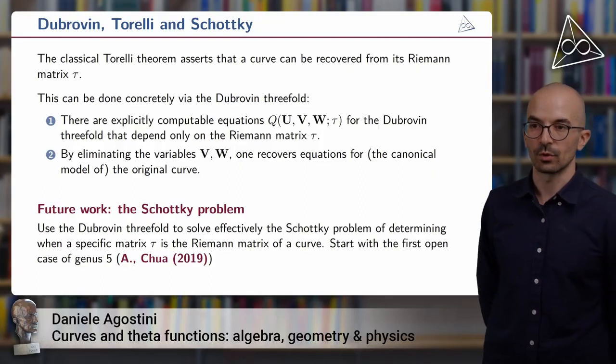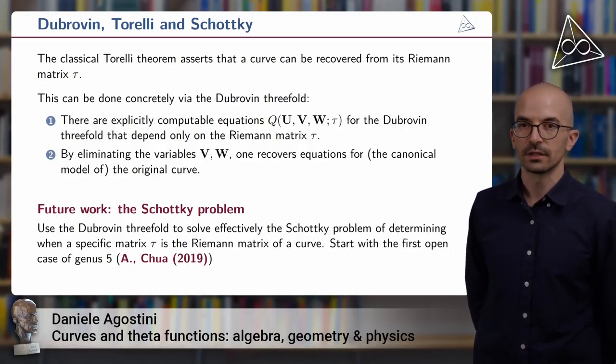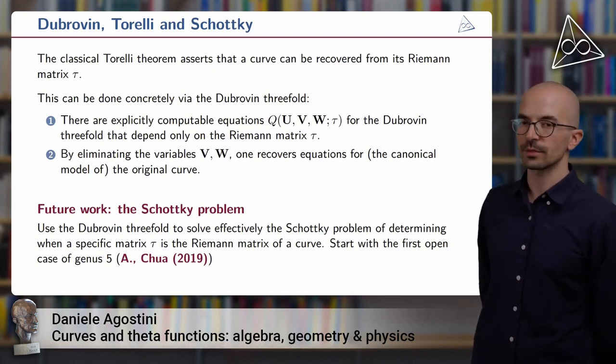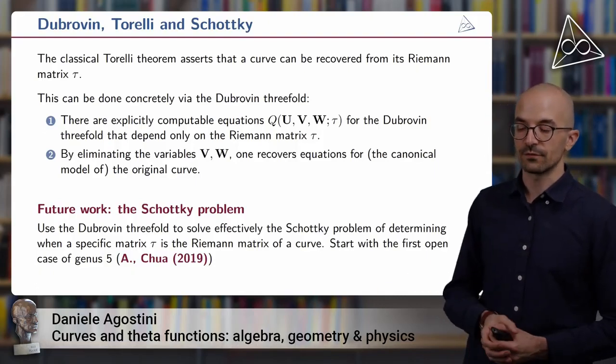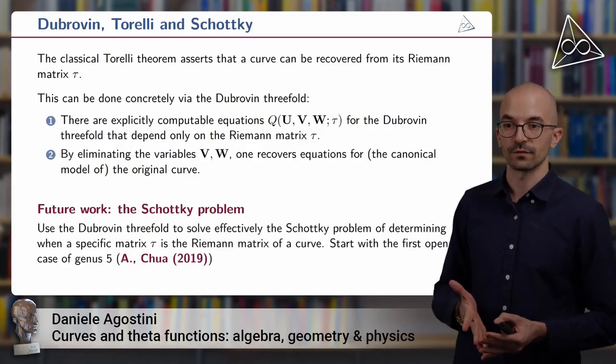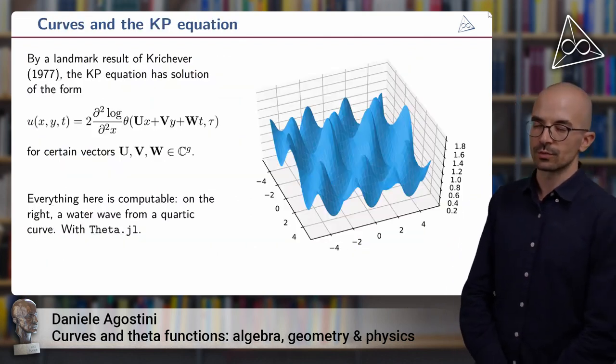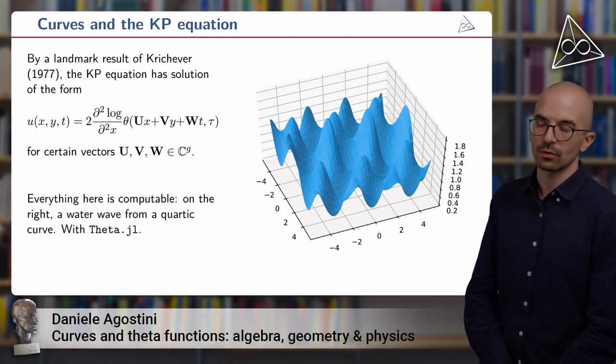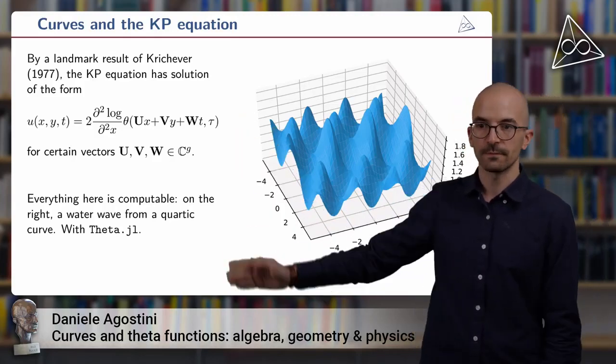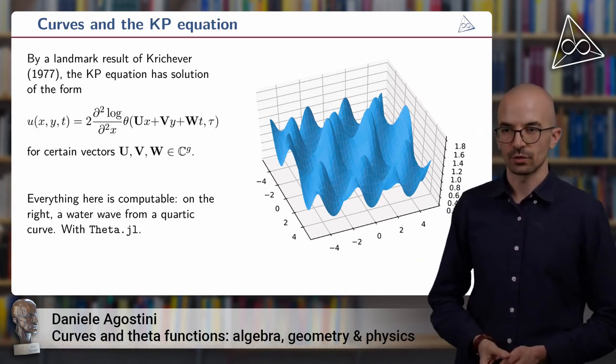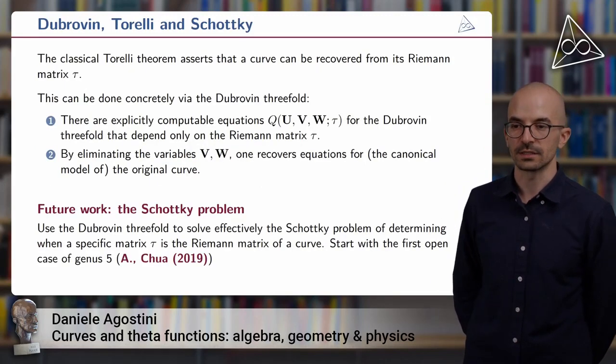This was already proposed by Dubrovin, and in future work I plan on using these ideas to tackle a different and more difficult problem, the Schottky problem. The Schottky problem is another classical problem in algebraic geometry which asks to decide for any given Riemann matrix tau whether it comes from a Riemann surface or not. This is actually solved in terms of the KP equation. So it was proven by Shiota that a Riemann matrix tau comes from a Riemann surface if and only if there exist parameters u, v, and w such that the expression over here is a solution to the KP. However, this is not effective, so it cannot be implemented on our computer, and I plan on working on this in the future, starting with the first open case of genus 5.